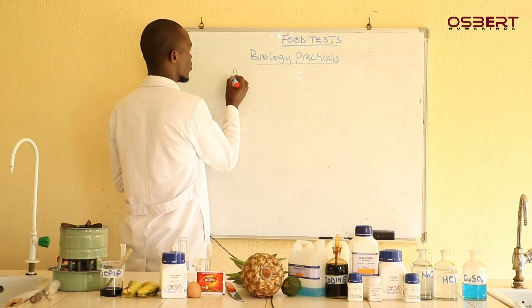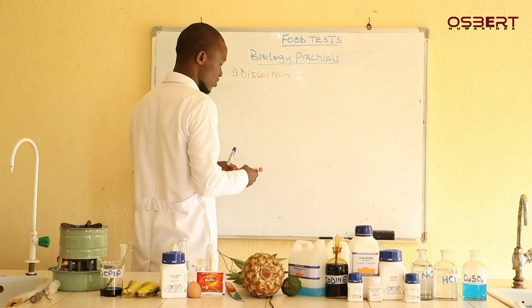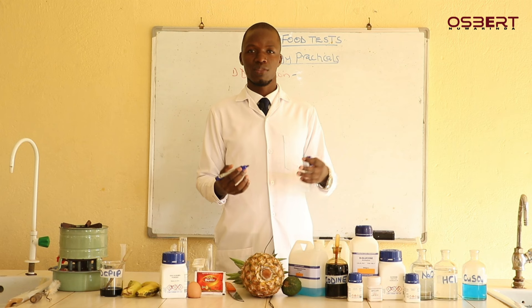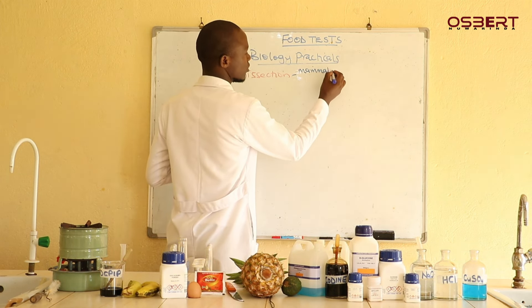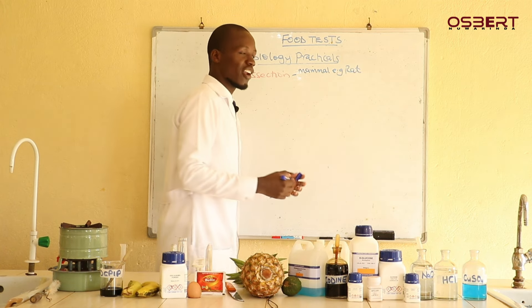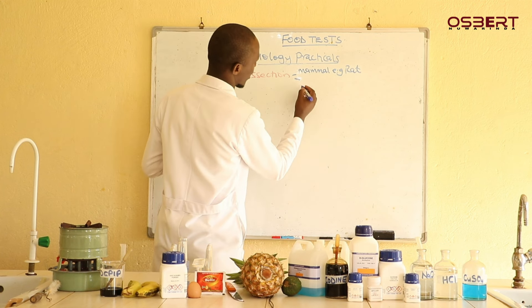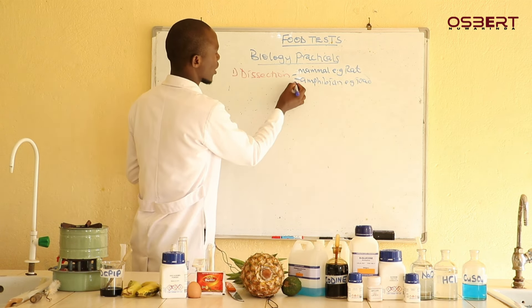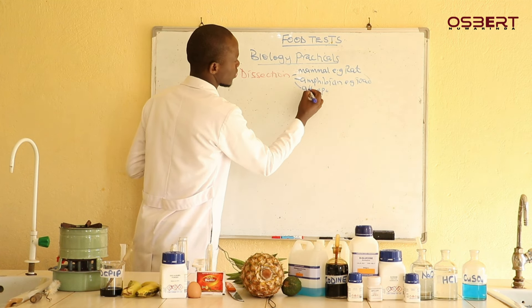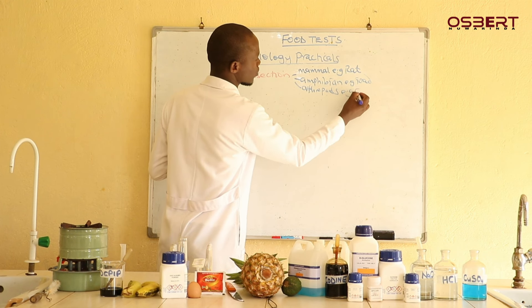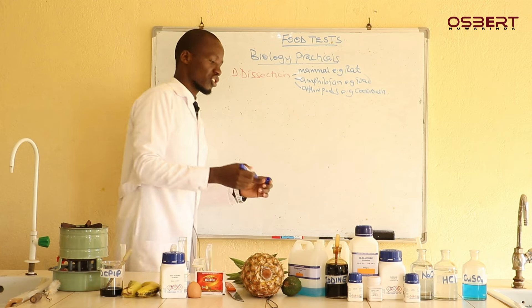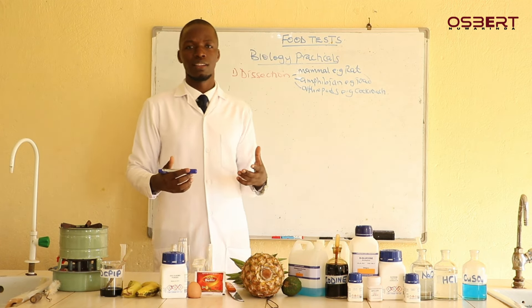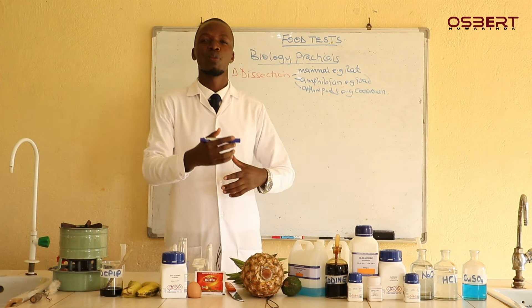First, there is a part which has to do with dissection. Here we cut small organisms — for example, we can dissect a mammal such as a rat or a rabbit. We can dissect an amphibian, for example a toad or a frog. We can also dissect arthropods, such as insects like a cockroach. So there is a category where we dissect these organisms.